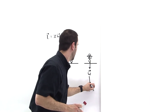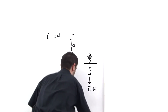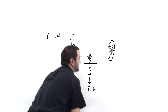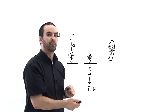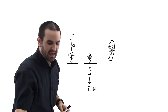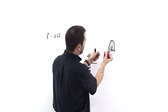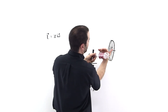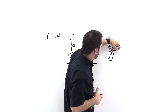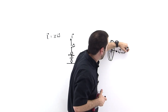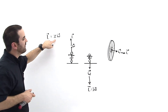Next example: we have this wheel spinning like so. It's hard to draw isometrically coming out of the board, so we use the bottle trick — rotate it like this, curl our fingers in the direction of rotation, and our thumb points to the right. So the angular velocity vector points in this direction, and the angular momentum is in the same direction.